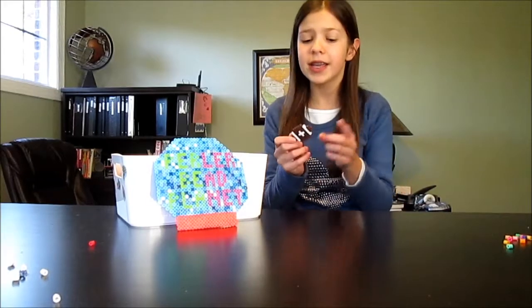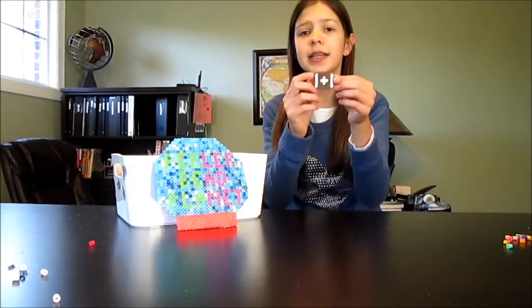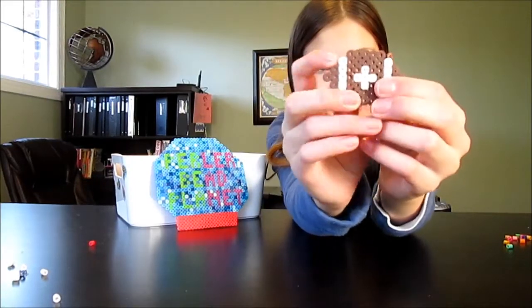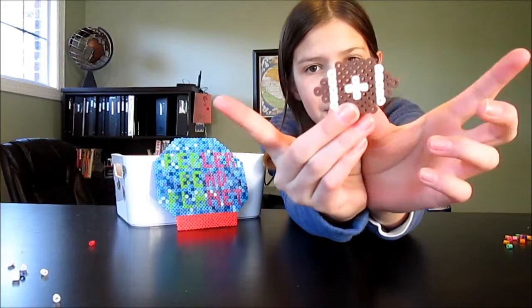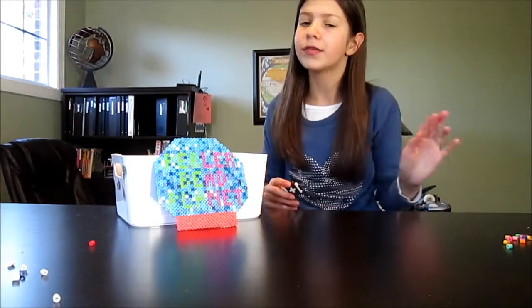Last step is you're going to take your blacks and by the whites you're going to put three, three, and then one. You should have the outline of the football complete.